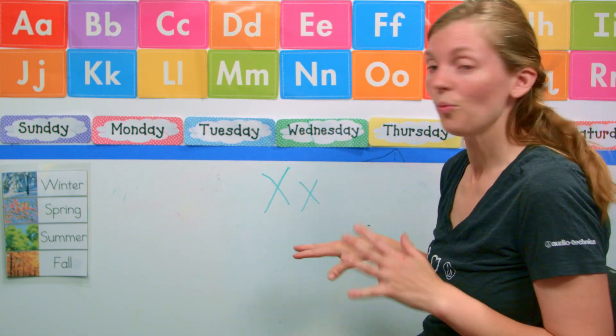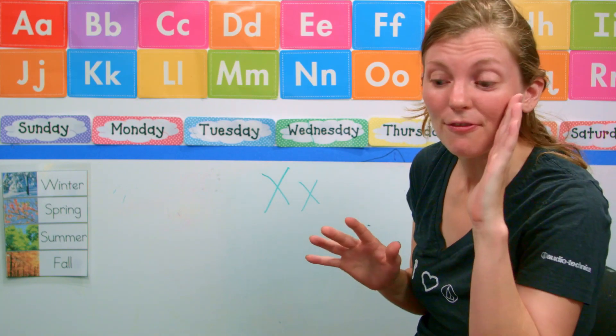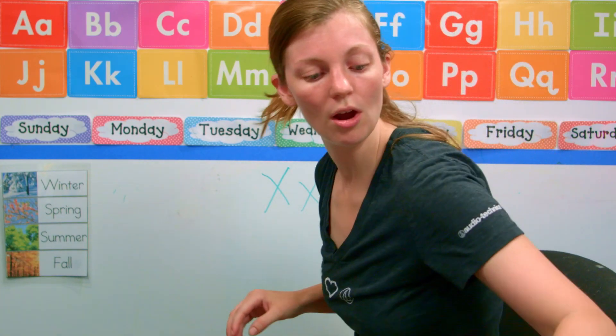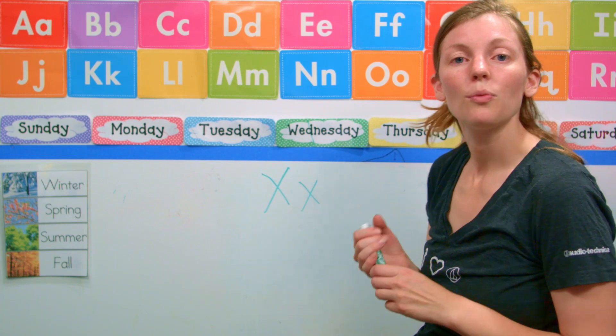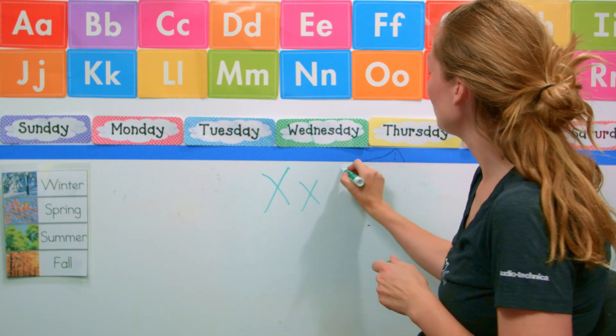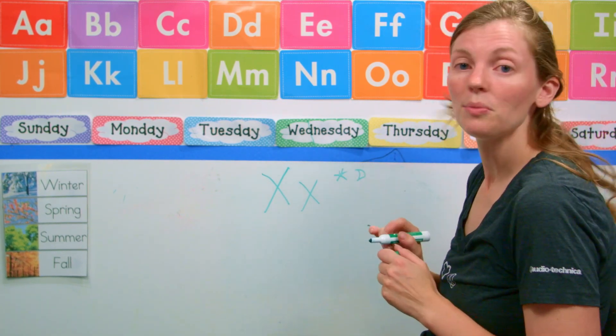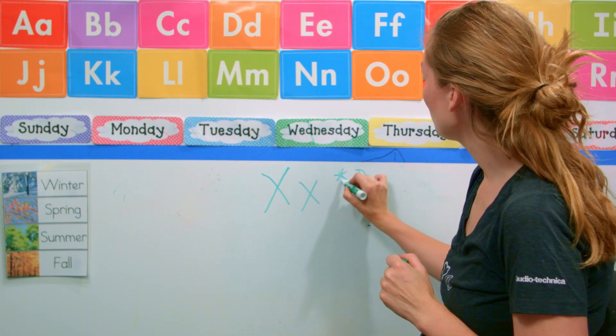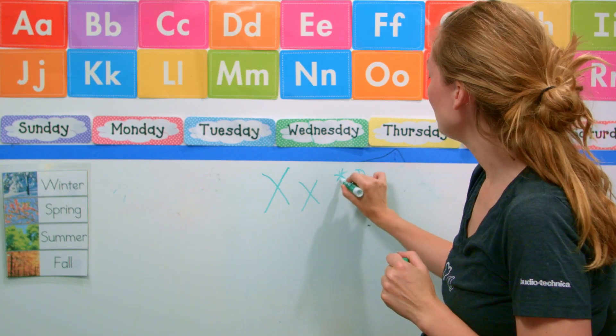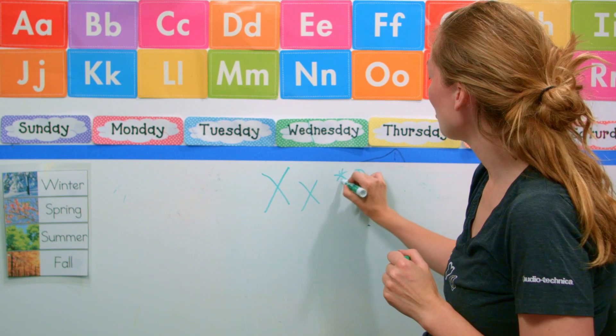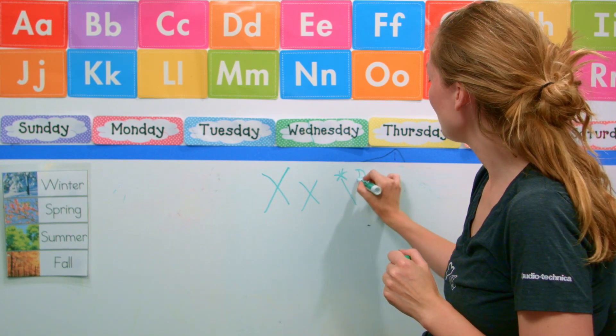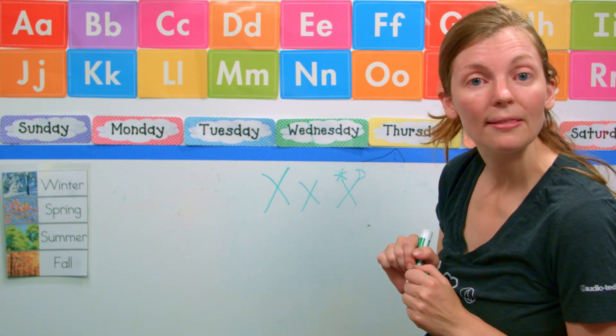So let's do our quick review. We are working on the letter X. Let's write it really quickly. I have my star and my moon to help me with my rights and lefts. We are going to make a diagonal line and I call it a slide. So start at the star, slide, go to the moon and slide. And there is our letter X.